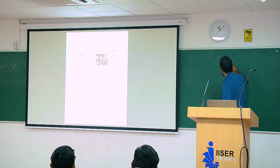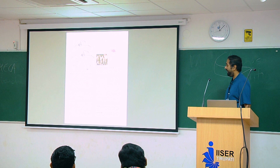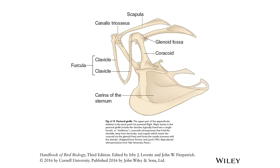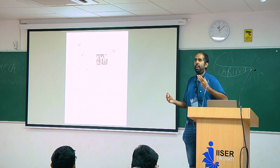It's called a carina, or a keel — like the keel of a ship. It provides a greater surface area for the large pectoral muscles to attach, and those help power the wing beat. This is particularly fun to see in pigeons.